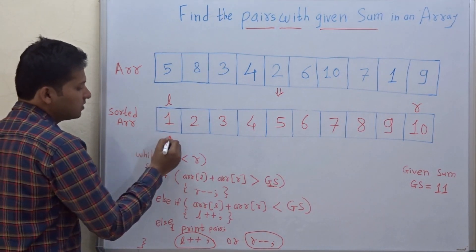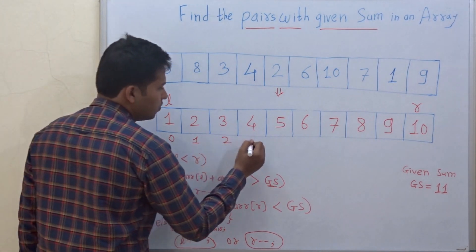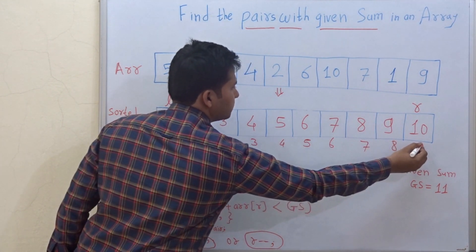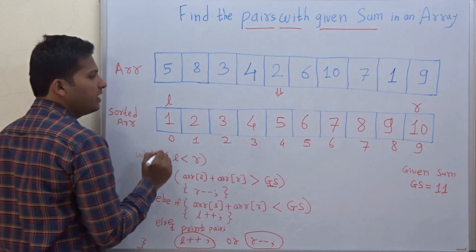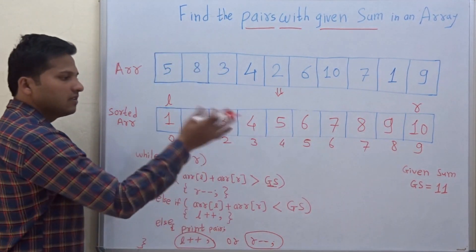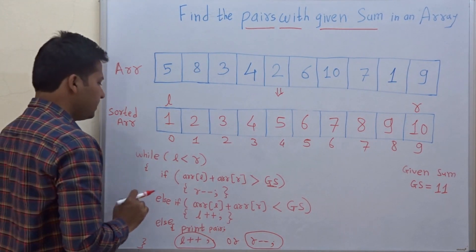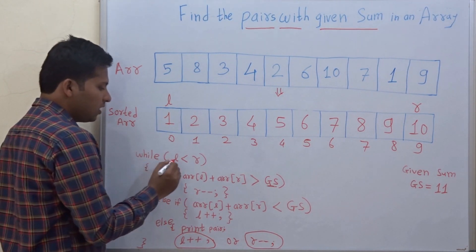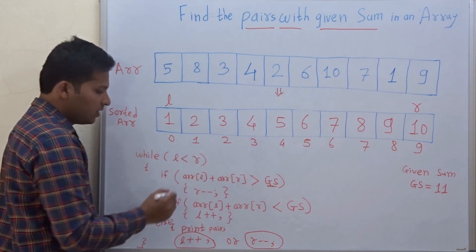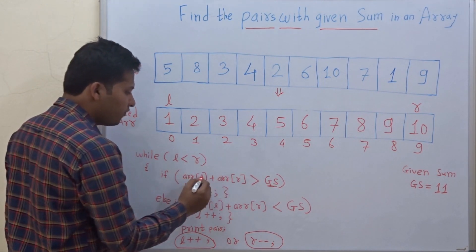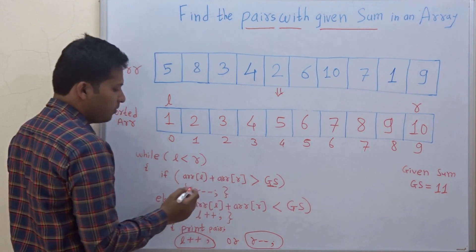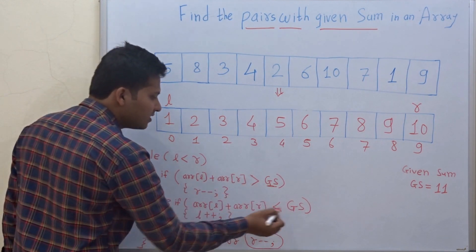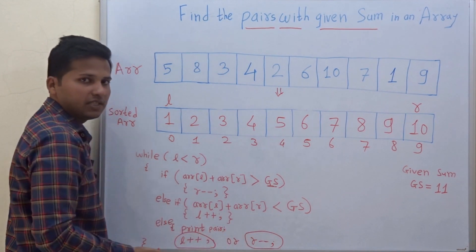Let's give indices to this array. The indices are 0, 1, 2, 3, 4, 5, 6, 7, 8, and 9. So L is initialized to index 0 and R is initialized to index 9. In this code we are going to run a loop while L is less than R, and inside we are going to check the sum of the elements at positions L and R — whether it is greater than, less than, or equal to the given sum.